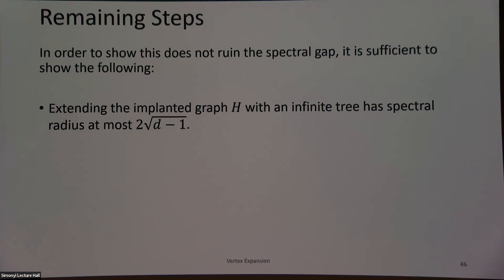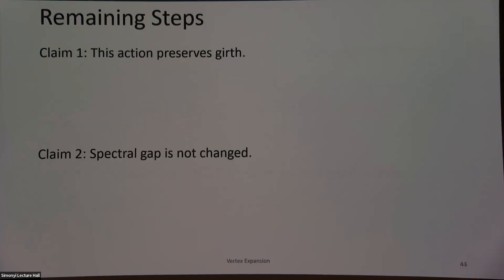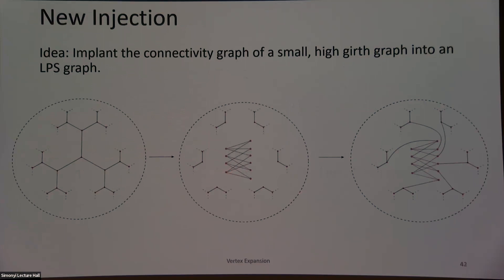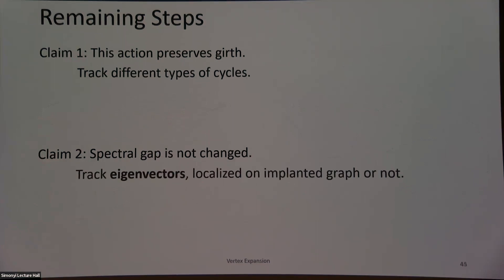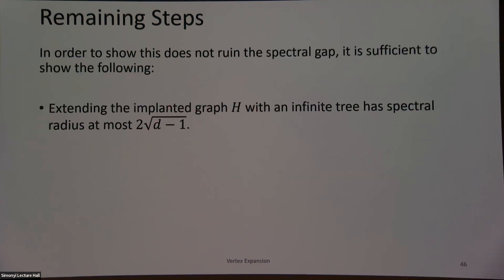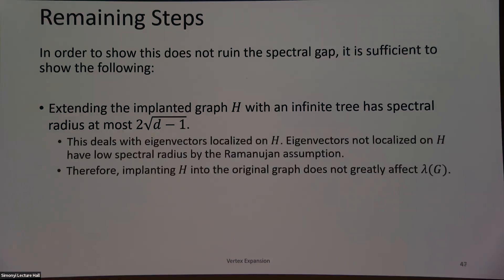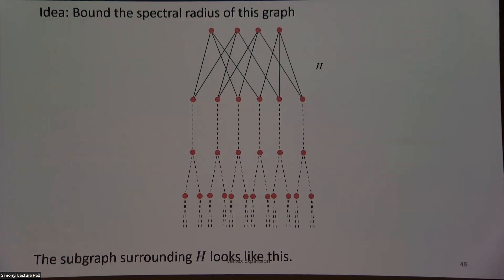We're implanting this inside a high-girth graph. So locally, this implanted graph H will look like H with an infinite tree extended from it. The first thing we'll show is that if it is H with an infinite tree extended, it has spectral radius at most 2√(D−1). This deals with eigenvectors localized on H. Eigenvectors not localized on H — since we originally assumed the original graph had low spectral radius — will also have low spectral radius.